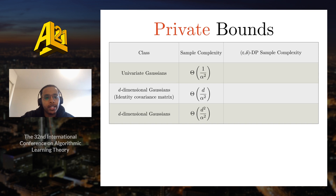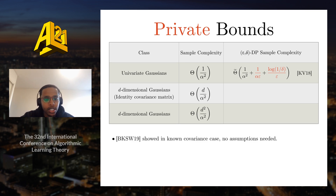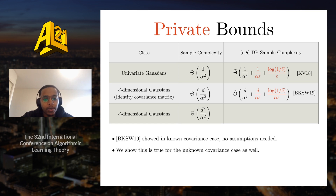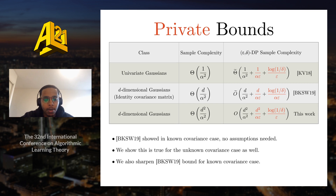For univariate Gaussians, there is an approximate differentially private learning algorithm with a known sample complexity, shown by Karwa and Vadhan. More generally, in the d-dimensional case with known covariance, Bun, Kamath, Steinke, and Wu showed we also do not need parameter assumptions. This leaves open the most general case where we do not know the covariance matrix. We show in our paper that we also do not need parameter assumptions there, and we give an upper bound. We also sharpen the upper bound for the known covariance case, crucially removing an extra α term in the last term.